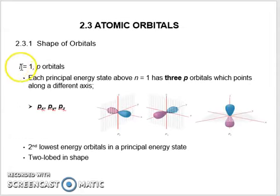When L equals one, the shape is dumbbell. This is called p orbitals. P orbitals have three orientations: px, py, and pz. This is the second lowest energy orbital in a principal energy level, and the shape is two-lobed.